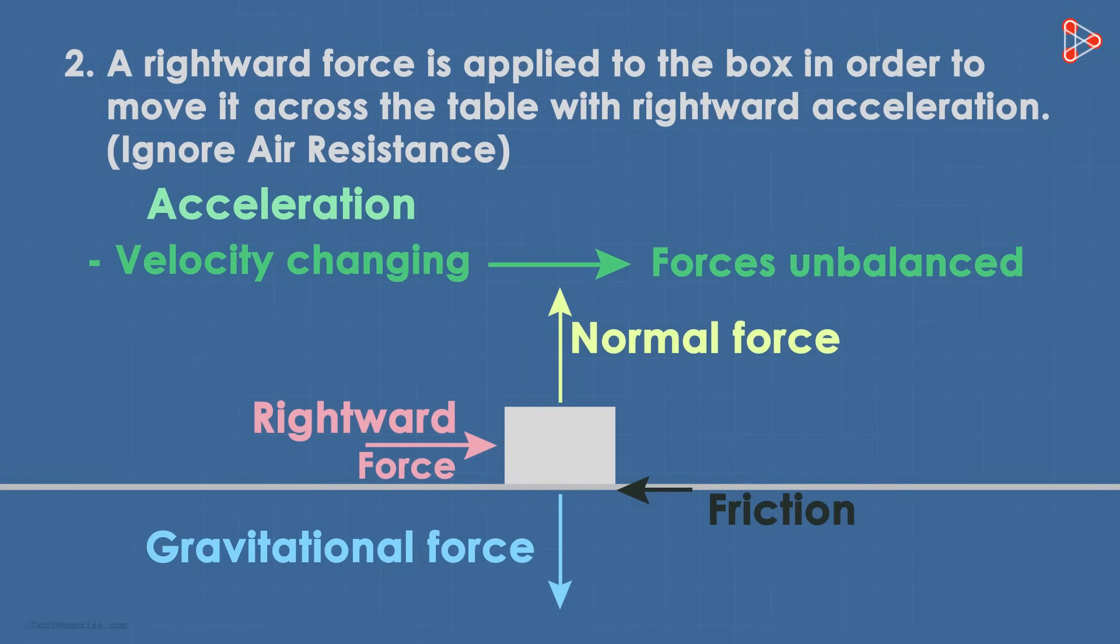And because the box is accelerating towards the right, it means that the force of friction is lesser in magnitude than the applied force towards the right. And hence the size of the arrow of the applied force is bigger than that of the frictional force.